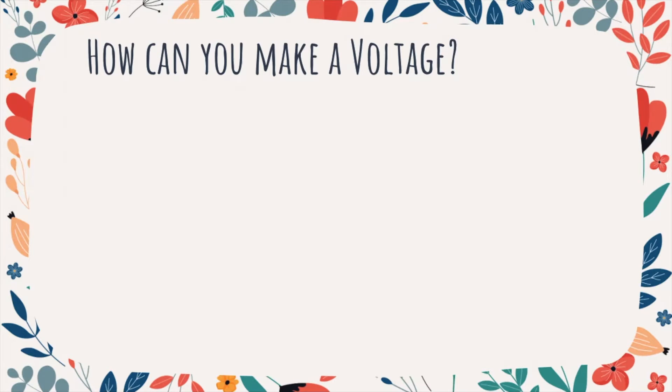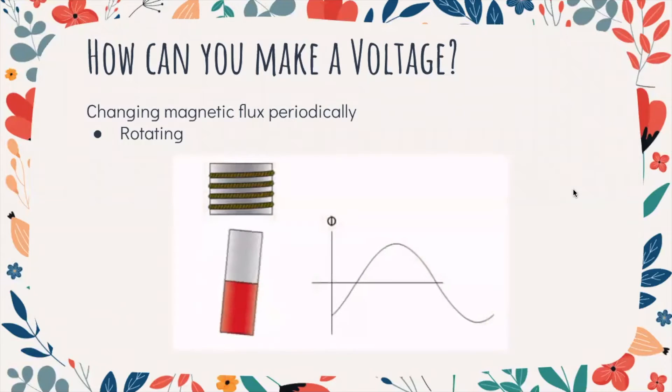So in this lab, we were looking at how can you make a voltage. One of the things you can do is you could rotate the magnet. When you rotate the magnet, this changes the magnetic flux periodically. Sometimes the flux is big, sometimes it's small. And since it's rotating, you kind of get this voltage and flux that change direction. It goes positive and negative, positive and negative.